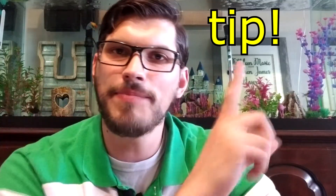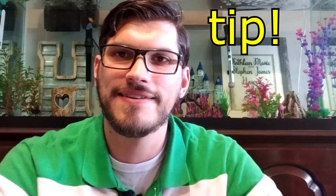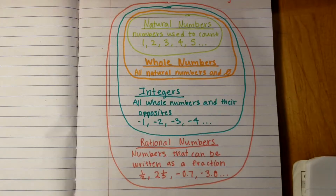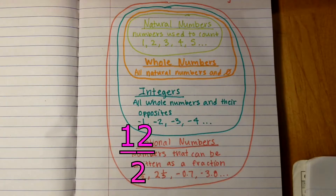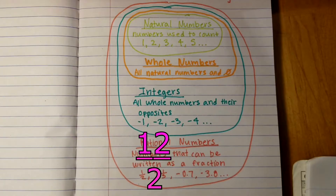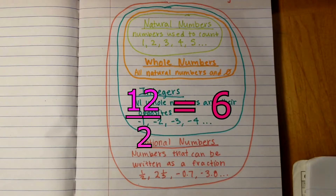And now the tip of the day. Sometimes numbers can trick you, like 12 halves. At first it looks like a fraction, so you think it is a rational number, which is true — it is rational. But since it can be simplified to the number six, it is best classified as a natural number.